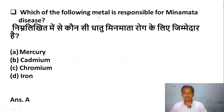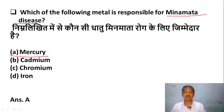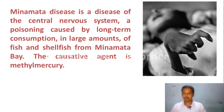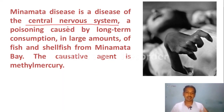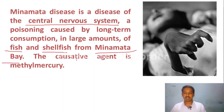Which of the following metals is responsible for Minamata disease? Option A: mercury, Option B: cadmium, Option C: chromium, Option D: iron. The correct answer is mercury. Minamata disease is a disease of the central nervous system, caused by long-term consumption of fish and shellfish from Minamata Bay. The causative agent is methyl mercury.